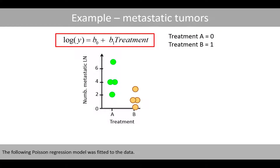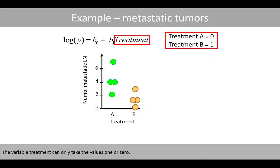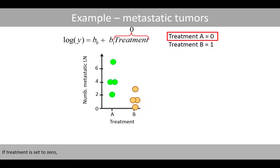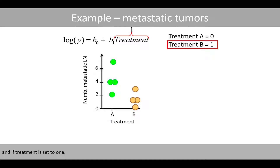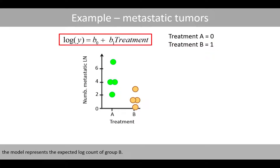The following Poisson regression model was fitted to the data. The variable treatment can only take the values 1 or 0. If the treatment is set to 0, the model represents the expected log count of group A. And if treatment is set to 1, the model represents the expected log count of group B.